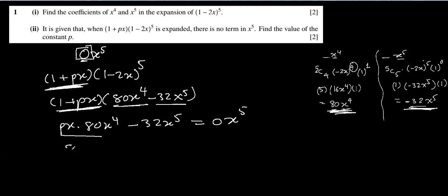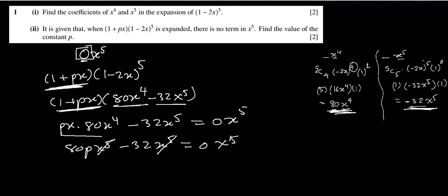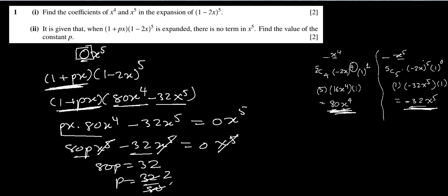So it becomes 80p·x⁵ minus 32x⁵ equal to 0·x⁵. Since all terms are x⁵ we ignore x and write 80p minus 32 equals 0. So 80p equals 32, and p equals 32 over 80. Since 16 times 2 is 32 and 16 times 5 is 80, the answer is p equals 2 fifths.